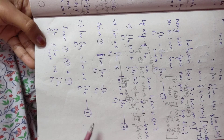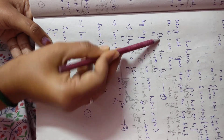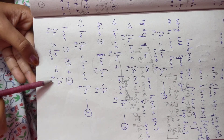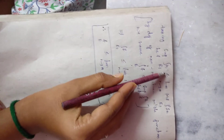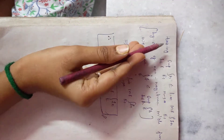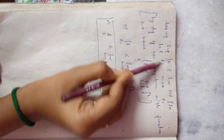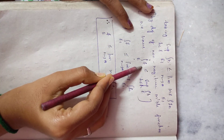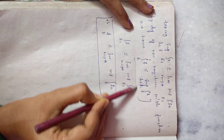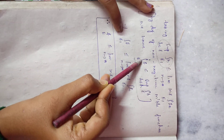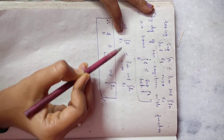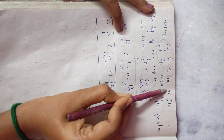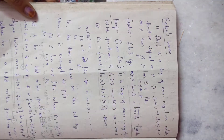Now we take the supremum on the left-hand side only. So the supremum of the integral of H over E₁ is less than or equal to the limit infimum of the integral of fₙ over E. By the definition of the non-negative measurable function, this supremum equals the integral of f over E₁. Therefore, the integral of f over E₁ is less than or equal to the limit infimum of the integral of fₙ over E₁. Hence, we have proved the theorem.